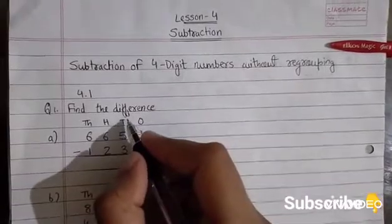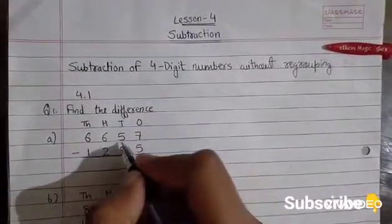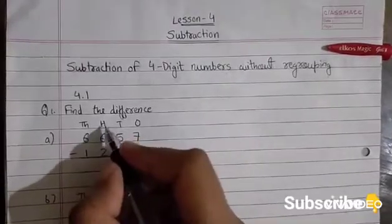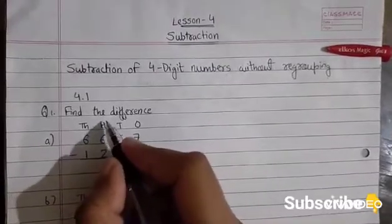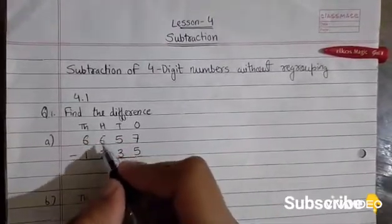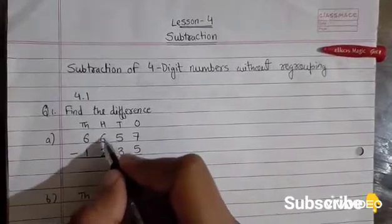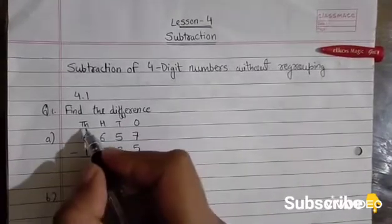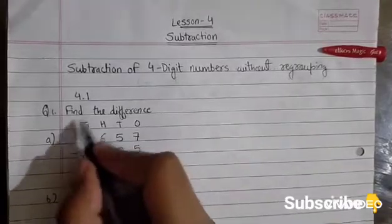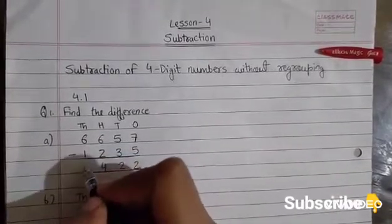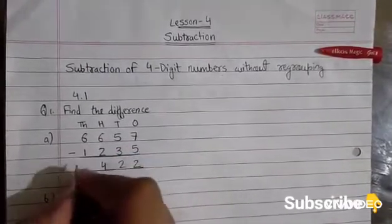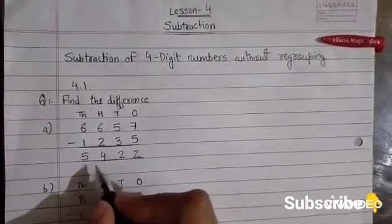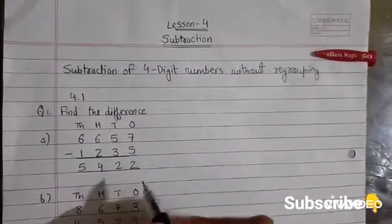Now, we will subtract the number given at the 10's place, that is 5 - 3 equals 2. Now, we will subtract the number given at the 100's place, that is 6 - 2 equals 4. Now, we will subtract the number given at the 1000's place, that is 6 - 1 equals 5. So, our answer is 5422.